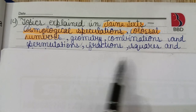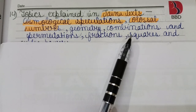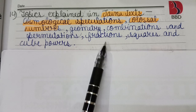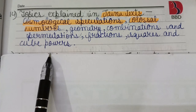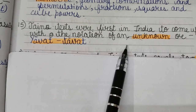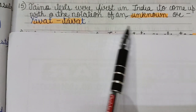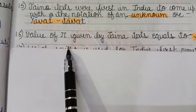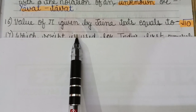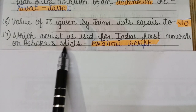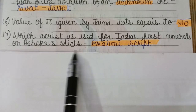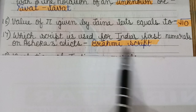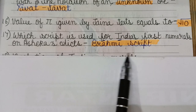Topics explained in Jain texts include cosmological speculations, colossal (very large) numbers, geometric combinations and permutations, and fraction squares and cube powers. Jain texts were the first in India to introduce the notation of an unknown value, called 'Yavat Tavat.' The value of Pi given in Jain texts is √10. India's first numerals appeared on Ashoka's edicts, written in the Brahmi script.